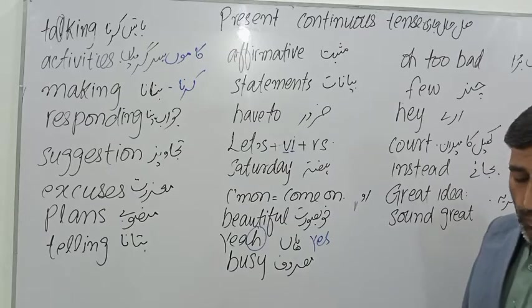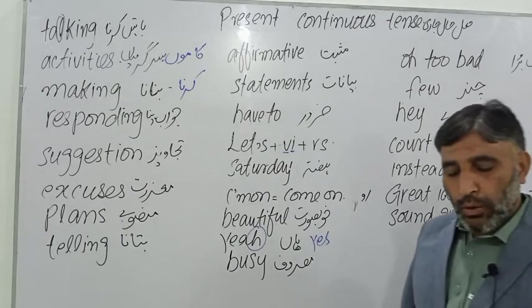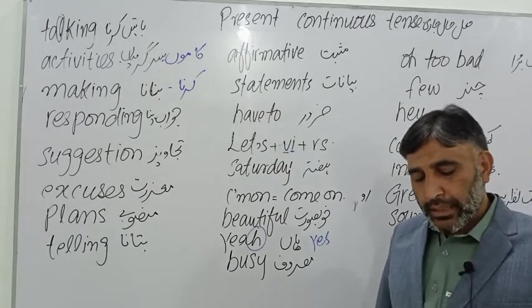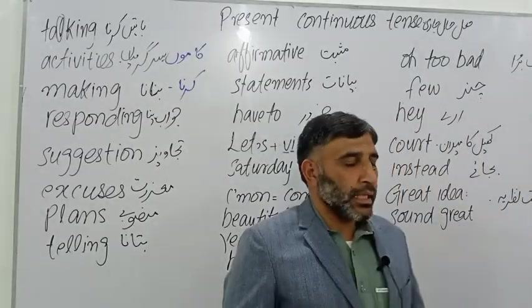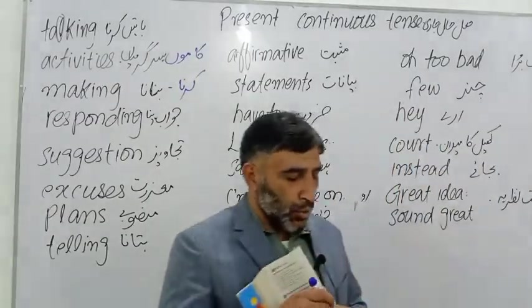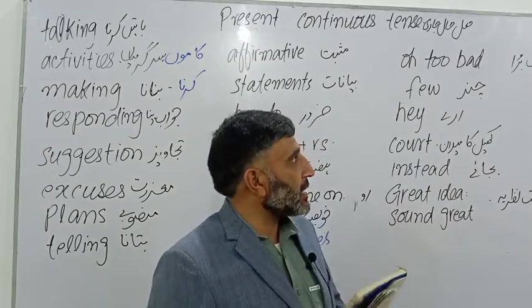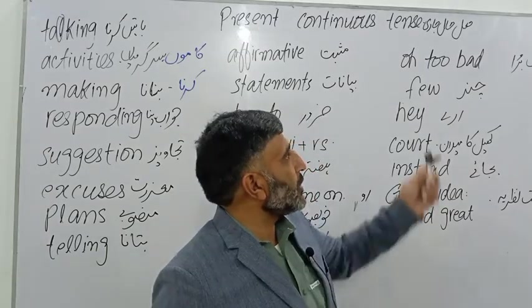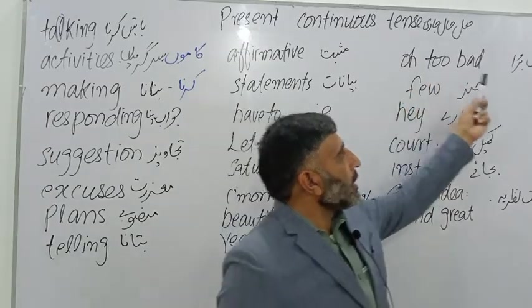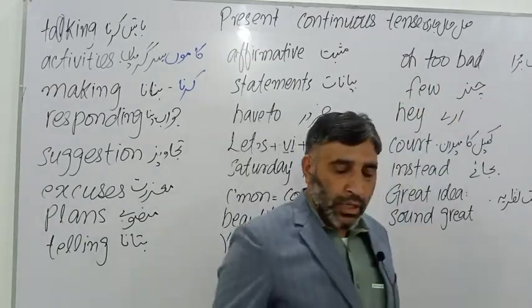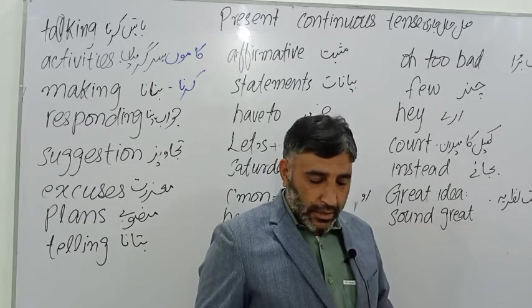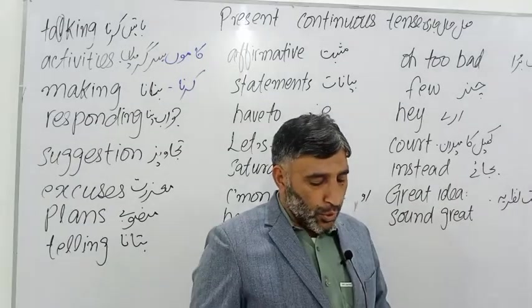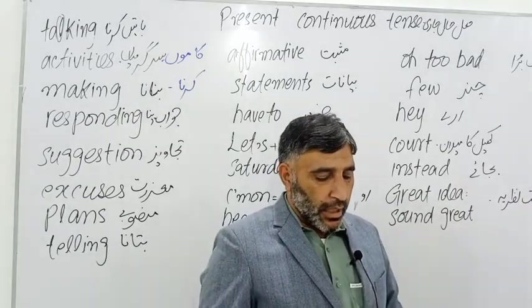So what does Mike say? Let's play baseball. Let's play baseball — aao ke baseball khelein. Let's again makes a suggestion. Baseball ek khel ka naam hai. And then he is asking about Sam — what's Sam doing? Sam kya kar raha hai? So what does Bob answer? He is busy, he is studying for the exam. Oh too bad — yeh to bahut bura hua. When we say oh too bad, it means our plan got disturbed.